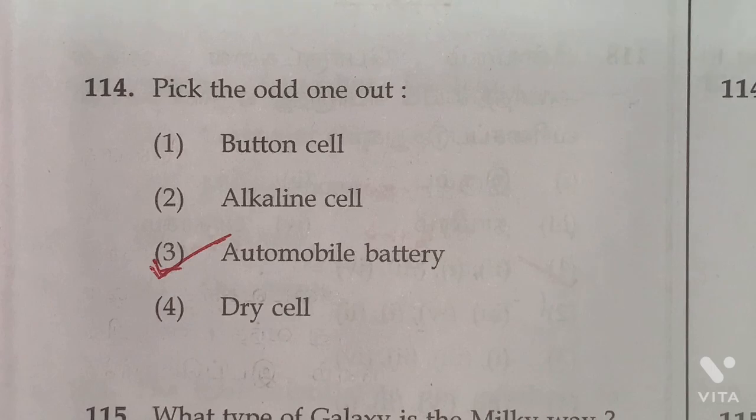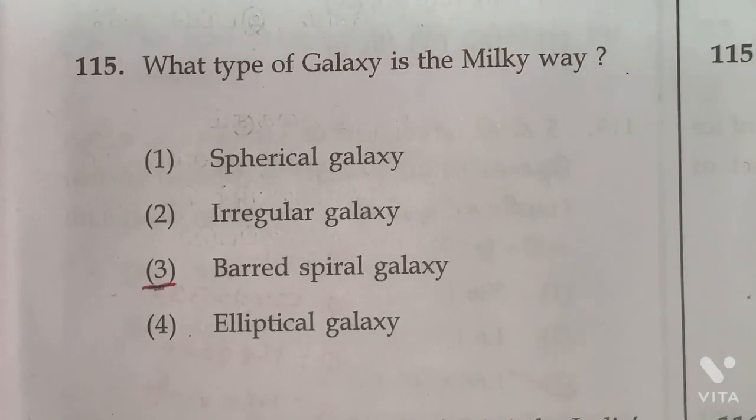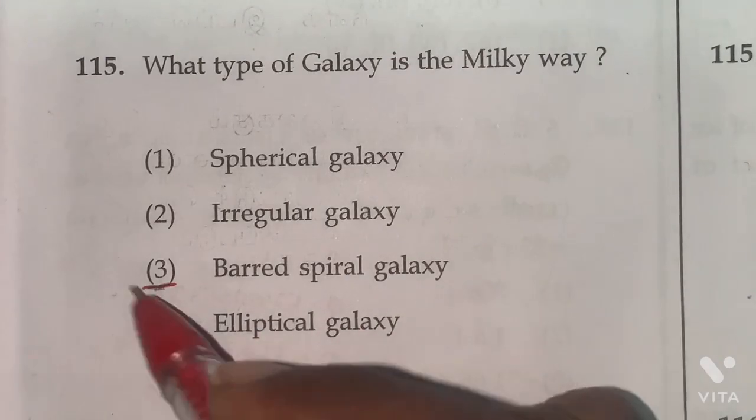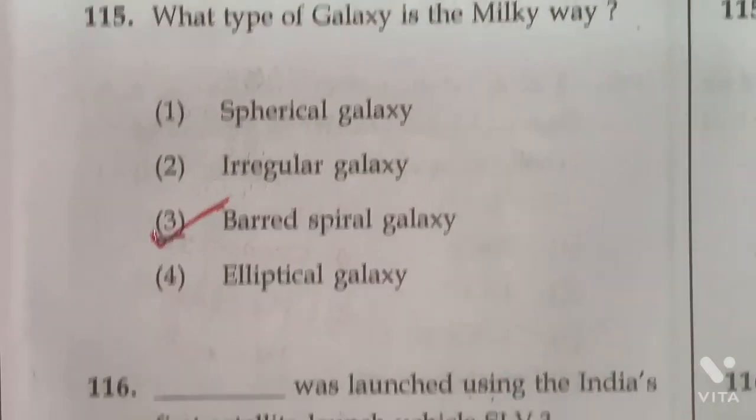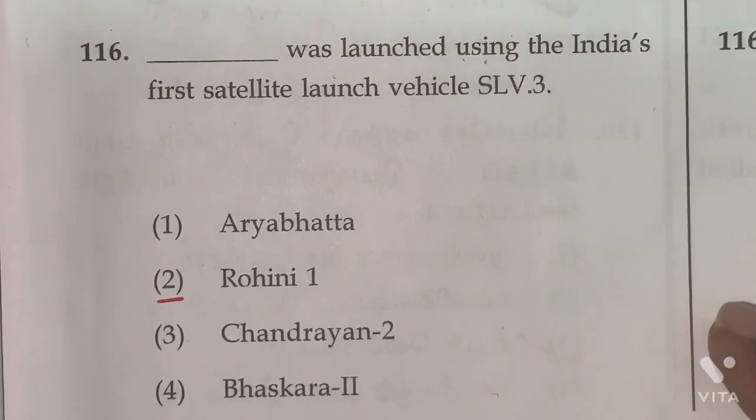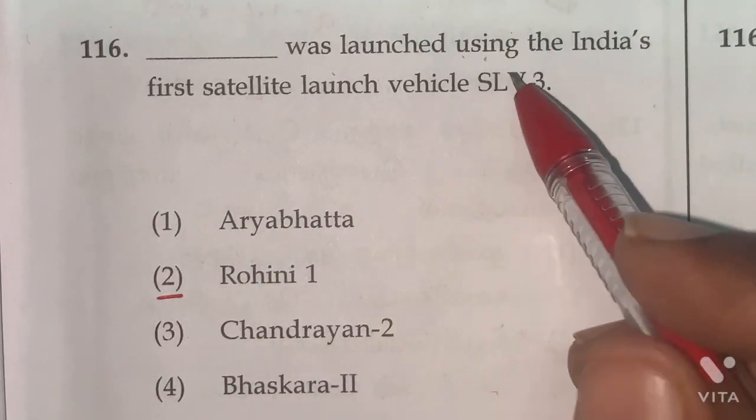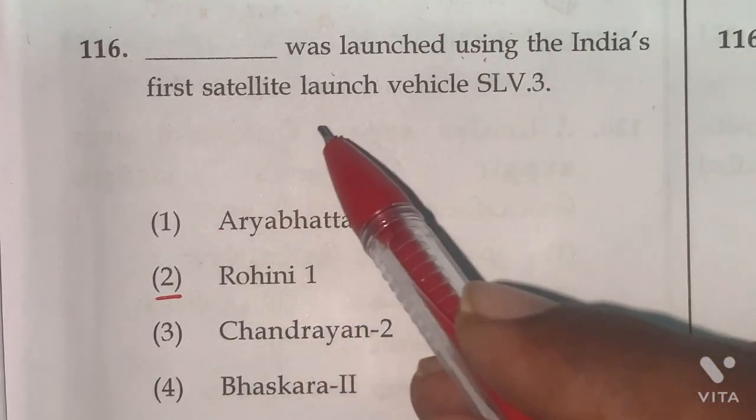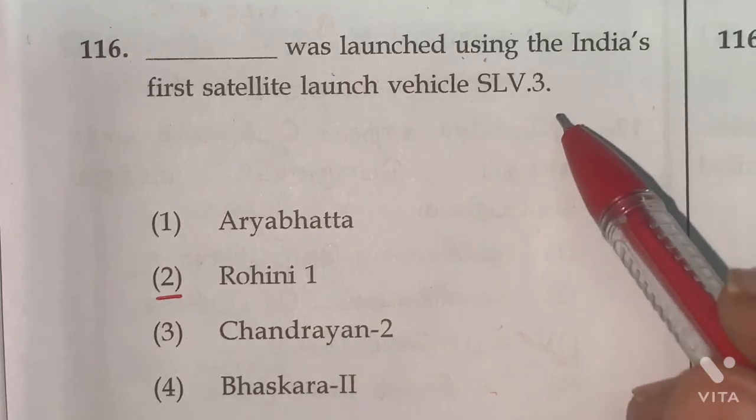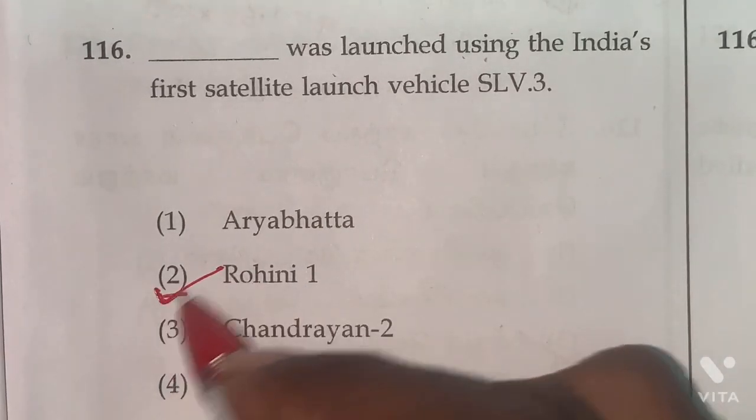115th, what type of galaxy is the Milky Way galaxy? Barred spiral galaxy. Option 3 is the right answer. 116th, India's first satellite launch vehicle SLV-3 launched Rohini-1. Option 2 is the right answer.